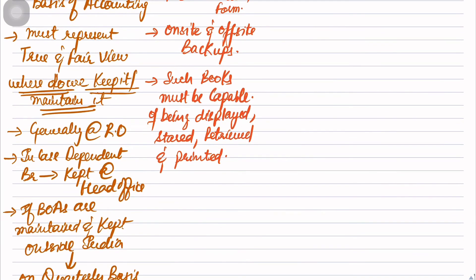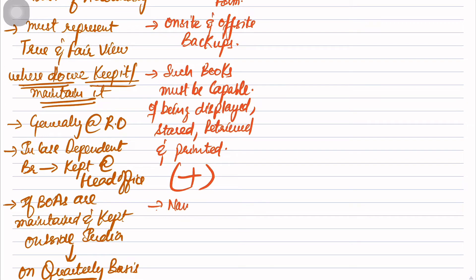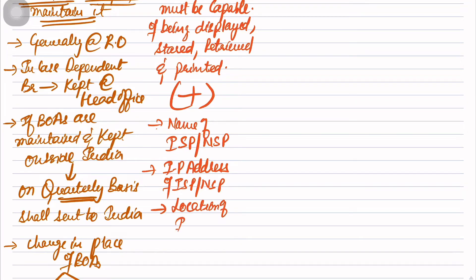Along with that, there are three additional things. First: name of internet service provider or network service provider. Second: IP address of internet service provider or network service provider. Third: location of internet service provider or network service provider - all of these must be filed with the ROC. Only then are you allowed to maintain the Books of Accounts in electronic form.